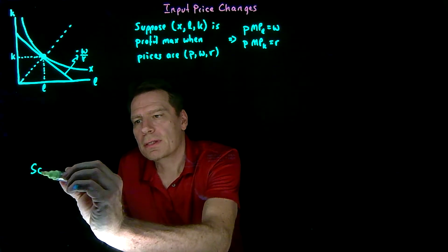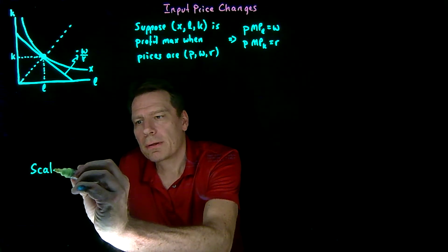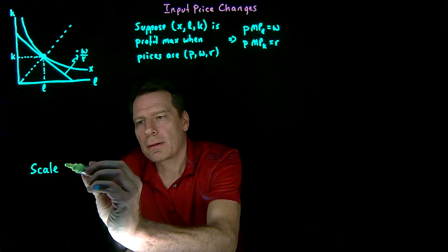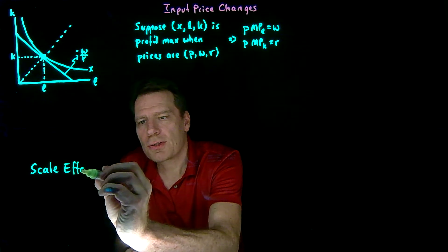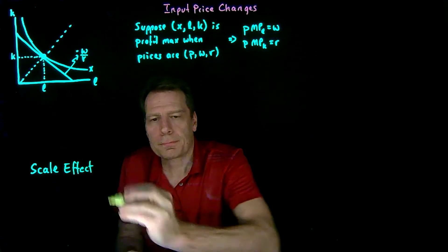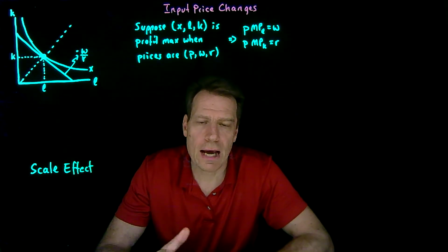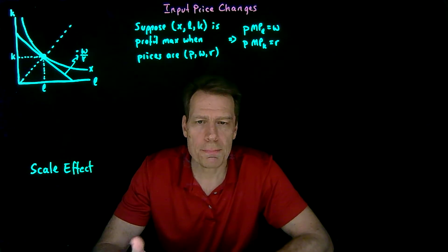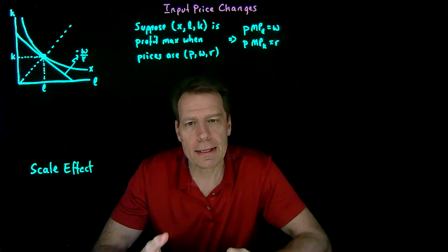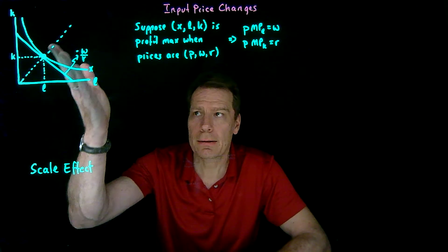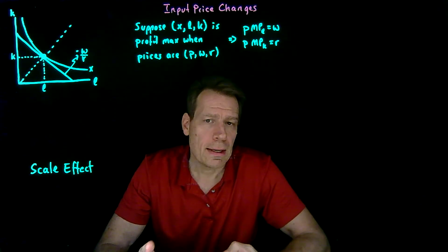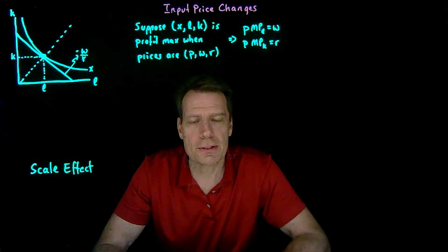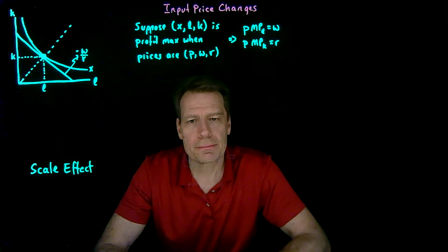Does the firm scale up or down as a result of a price change? We saw that if the output price goes up, the firm is going to scale up and move to a higher isoquant. And when output prices fall, it's going to scale back.